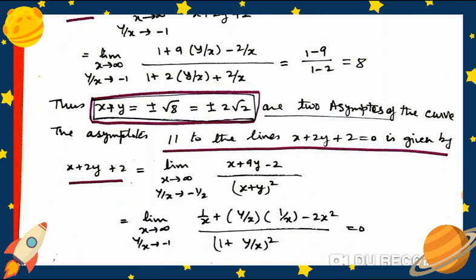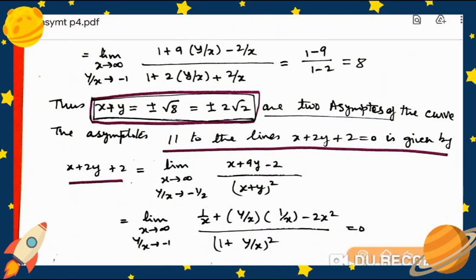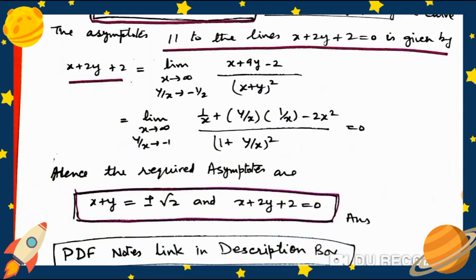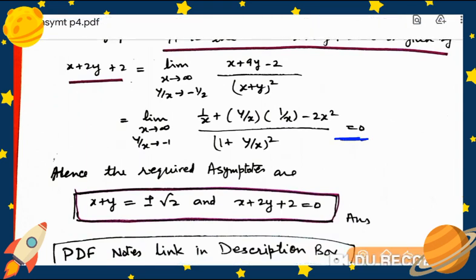The asymptote parallel to the line x + 2y + 2 = 0 is given by (x + 2y + 2) times the limit as x→∞ with y/x → −1/2, giving the expression (x + 9y − 2)/(x + y)² equal to zero. Hence the required asymptotes are: x + y = ±√2 and x + 2y + 2 = 0.